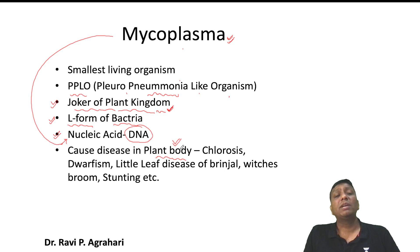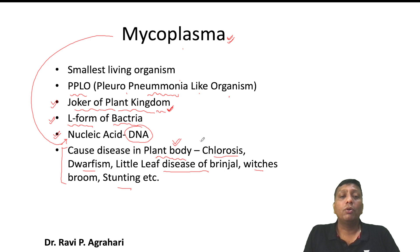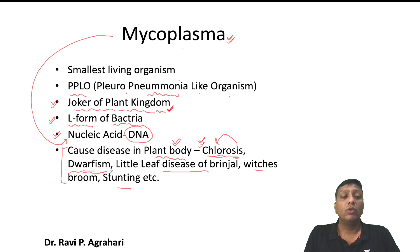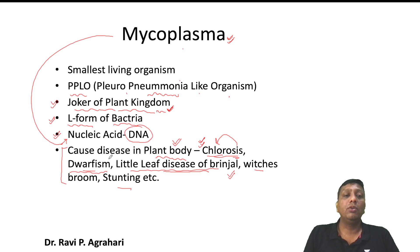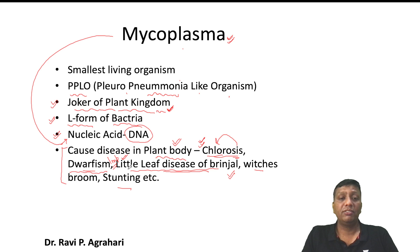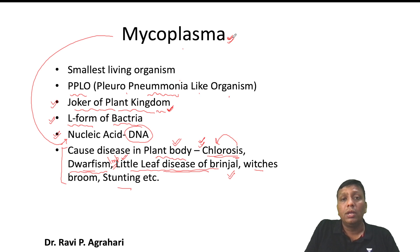Chlorosis means death of chlorophyll — the plant leaf turns from green to yellow. Dwarfism means the height of the plant reduces. Little leaf disease of brinjal means the size of the brinjal leaf reduces, decreasing plant productivity. This is an important example seen in many examinations — little leaf disease of brinjal is caused by mycoplasma. Witches' broom is a fruit infection, and stunting means overall growth of the plant is reduced. These diseases are mainly caused by mycoplasma in plant bodies.